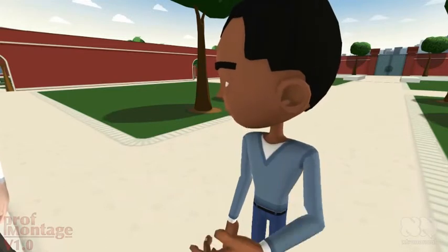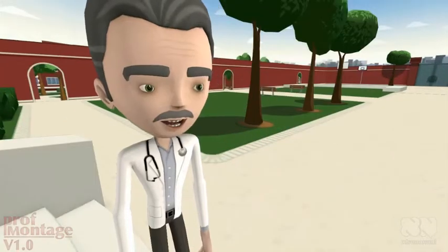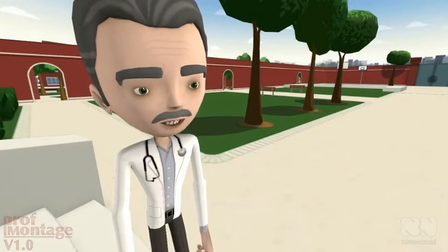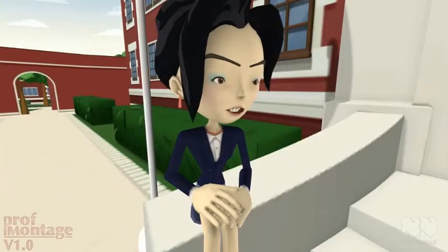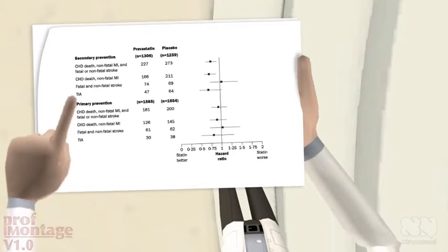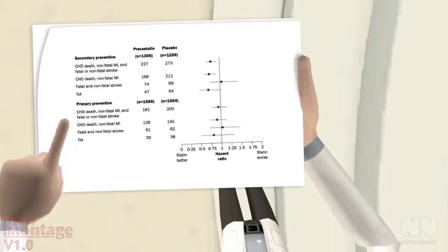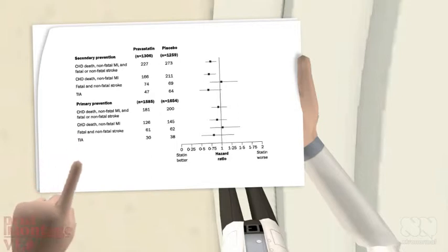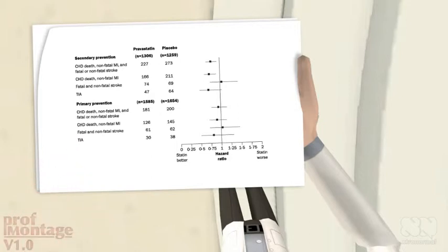Did the trial data support this? The data in the elderly are few and are consistent with either argument. There was one trial of statins restricted to patients over 70. The benefit of treatment was largely driven by the subgroup with pre-existing vascular disease. The results in primary prevention are at the bottom — they did not reach statistical significance. But the study was underpowered, so there could still be an effect on coronary events in older patients.